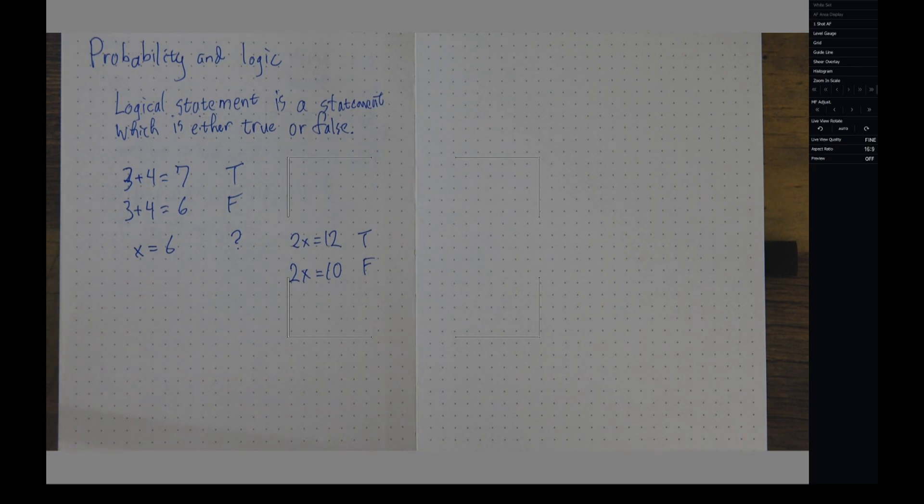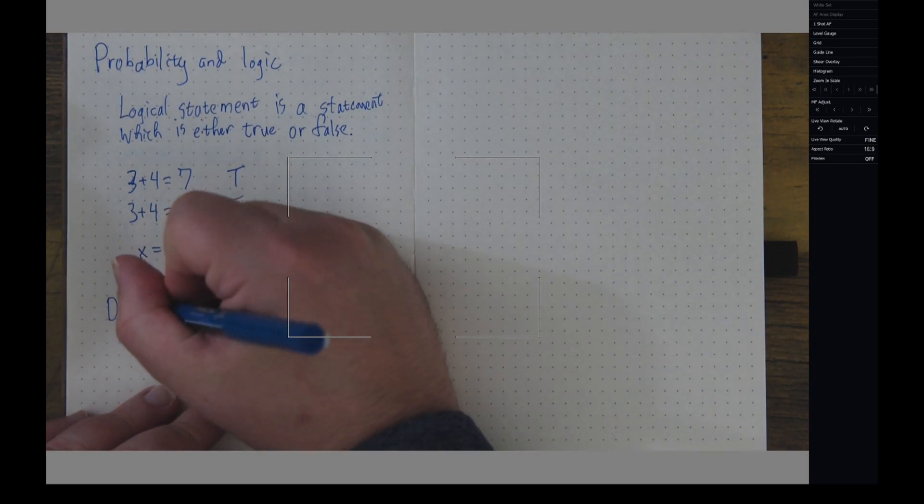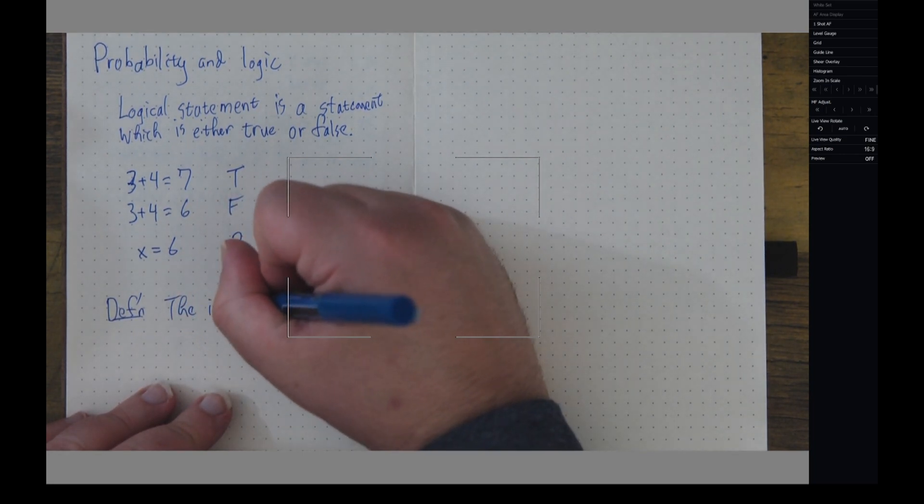So now that I have these true and false statements, I want to turn them into numbers. Of course, if I'm dealing with a computer, at the end of the day, a computer deals with bits - it deals with zeros and ones. And so in order to do that, I'm going to make the following definition, which is called the indicator function.